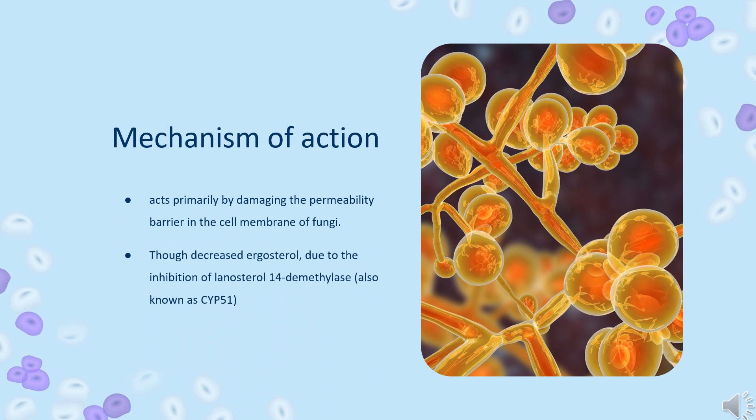Mechanism of Action: Econazole interacts with 14-alpha-demethylase, a cytochrome P450 enzyme necessary to convert lanosterol to ergosterol. As ergosterol is an essential component of the fungal cell membrane, inhibition of its synthesis results in increased cellular permeability, causing leakage of cellular contents.